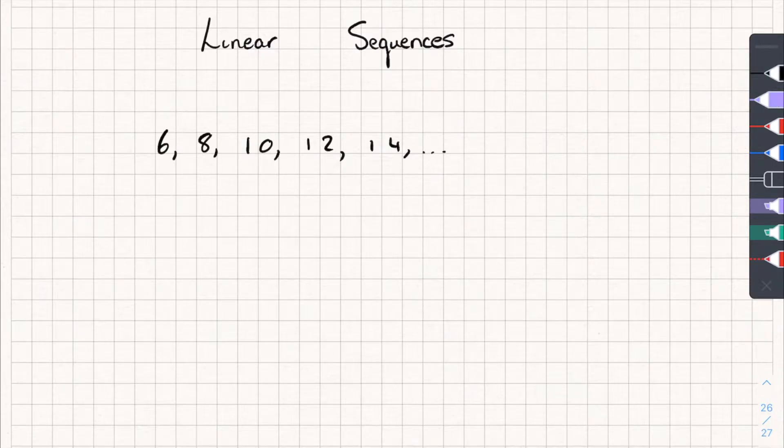So let's have a look at this one. We can see it goes plus 2, plus 2, plus 2, and so on. It's always plus 2. So this has a common difference of plus 2, and because it's plus 2 every single time, it's a linear or arithmetic sequence.